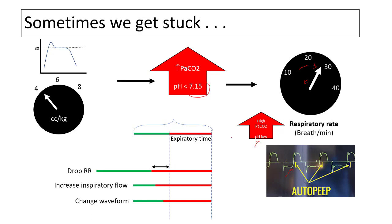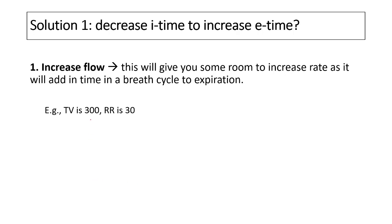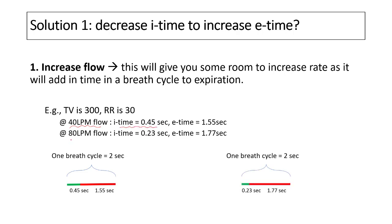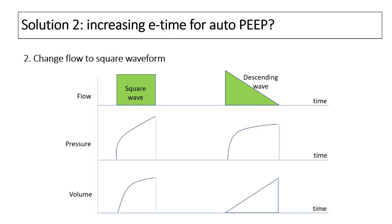You can give the patient extra time to exhale by increasing expiratory time, thus decreasing auto-PEEP, through three methods. First, you can drop the respiratory rate, though this reduces minute ventilation and may worsen pH. Second, increasing inspiratory flow shortens the I-time, adding extra time for exhalation. For example, at a tidal volume of 300 with rate 30 and flow of 40 L/min, the I-time is about 0.45 seconds; increasing flow to 80 L/min decreases I-time to 0.23 seconds.